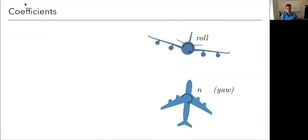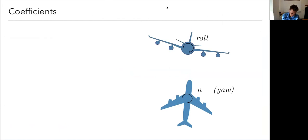First let's define these coefficients. We've talked about pitching moment coefficient. There are now in the lateral direction two other moments about our three axes. Pitching was about the longitudinal axis. Rolling moment — imagine we take an axis out the nose of the airplane — is a moment about that axis, often given the symbol L, but do not confuse it with lift coefficient. The rolling moment coefficient is the rolling moment normalized by dynamic pressure and the wing reference area.